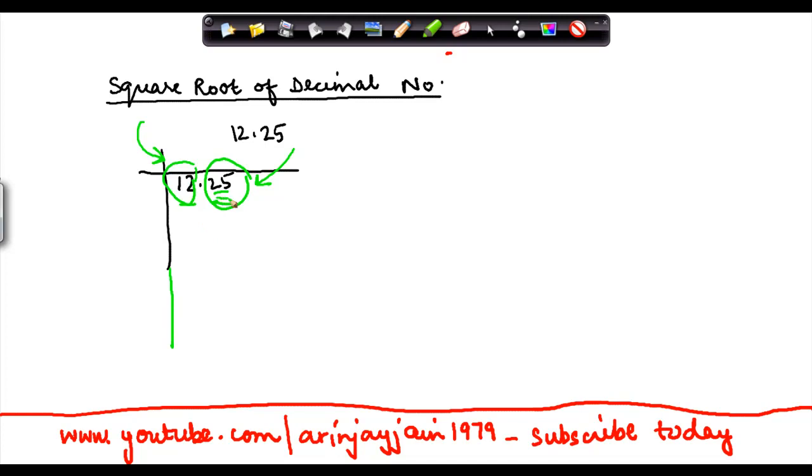So here basically I have 12.25 as one pair. I will just remove this. And I have 12 as another pair. So again for 12, I need to find out a number which when multiplied by itself gives the number less than 12, which is 9. I subtract 9 from 12, I get 3 here. I multiply 3 by 2, so I get 6 here.